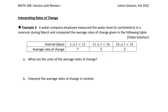In this example, we are given that a water company employee measured the water level in a reservoir during the month of March and computed the average rates of change and put them in this table. This is kind of turning things on its head — instead of being given water levels and computing the average rates of change, now we're given the rates of change and we're asked to find different information. There are two big ideas in calculus: rate of change, which we've just been talking about, and accumulated change, which this problem starts to get into.